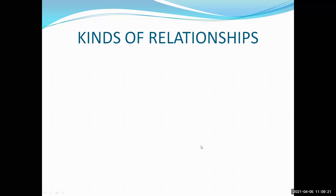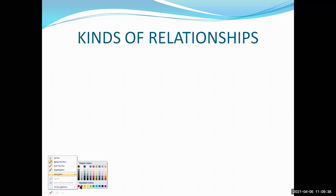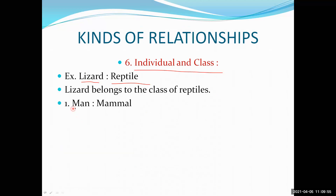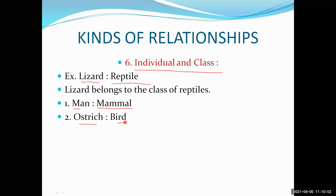Okay, fine. So we people will continue. People just try to remember what was done earlier. The relationship we are going to discuss is individual and class. Lizard is an animal which comes in the reptile category. In the same way, man is a mammal. Ostrich — its category is bird. Snake comes in reptile, so lizard and snake both are reptiles.